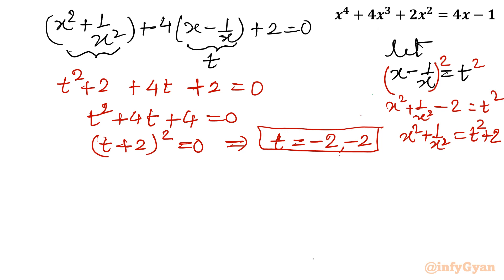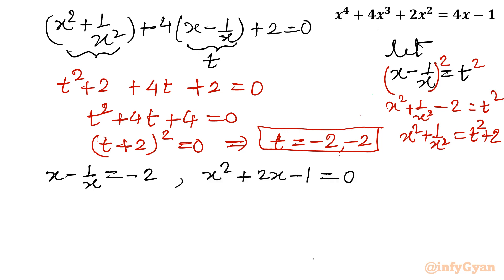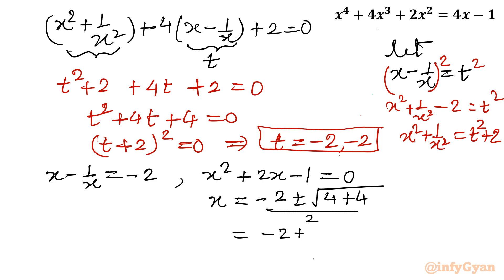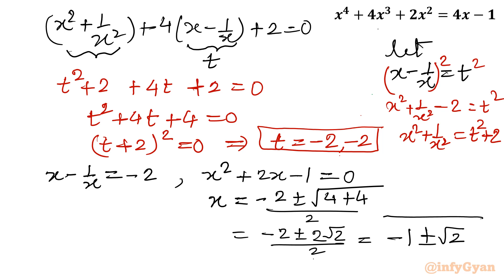Now putting back the value of t: x minus 1 over x equals minus 2. Multiplying through by x gives a quadratic equation. Applying the quadratic formula: x equals minus 2 plus or minus root 8 over 2, which simplifies to minus 1 plus or minus root 2 — the same result as method number 1.